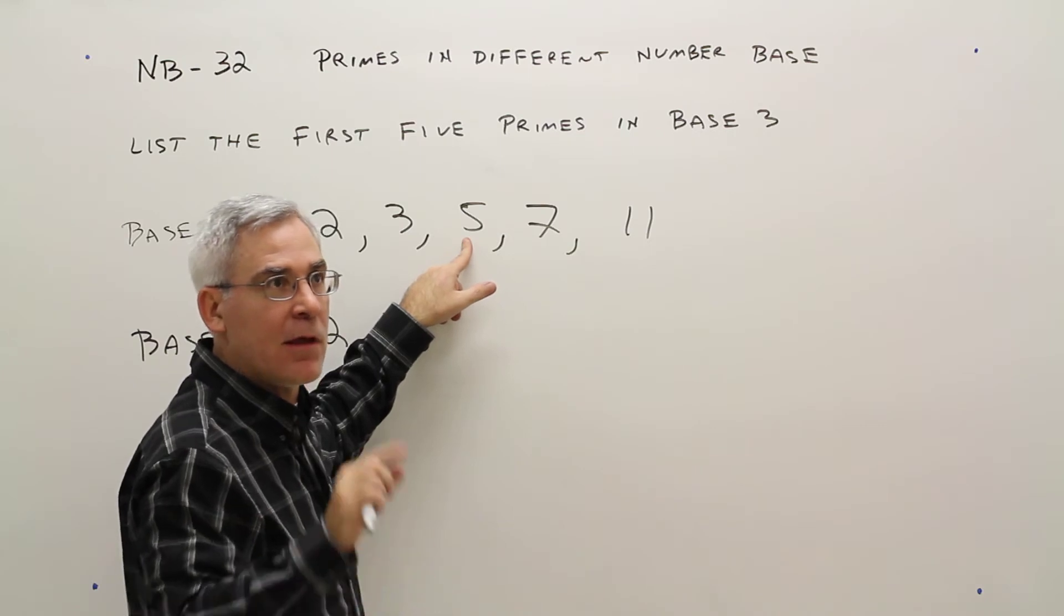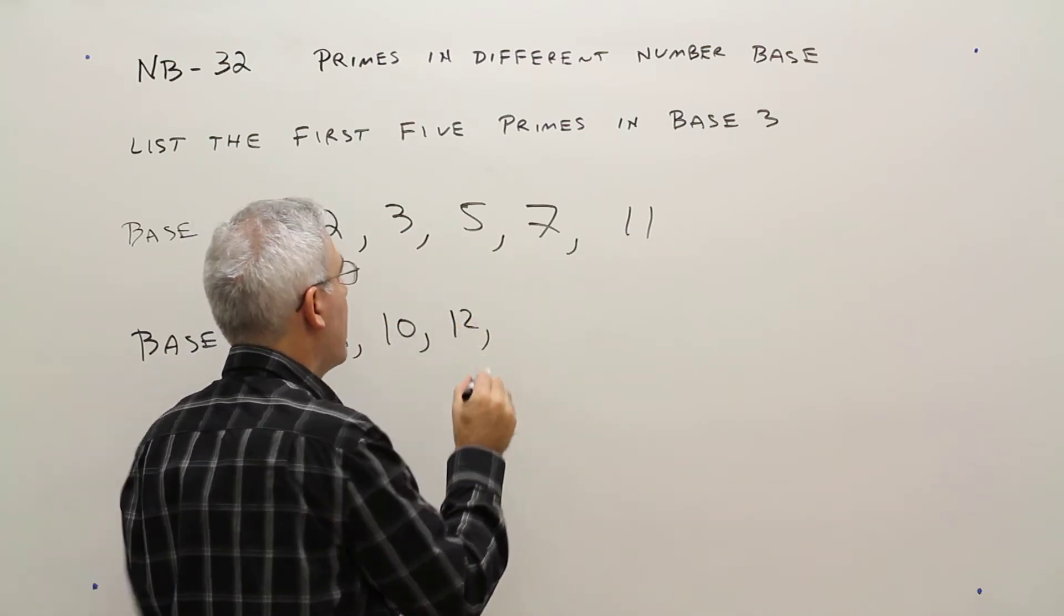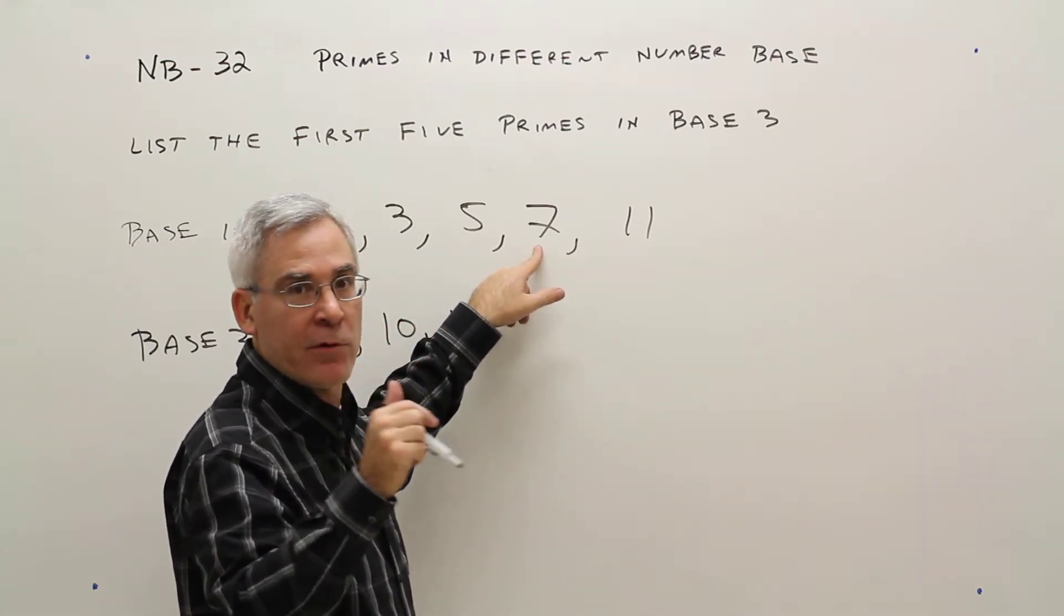5 in base 3, 1 three, 2 more, so that would be 1, 2. 7, I can fit 2 threes in there, and then I'd have 1 left over, 2, 1.